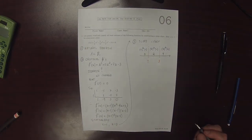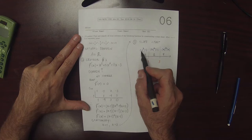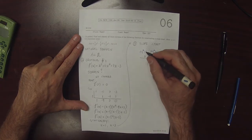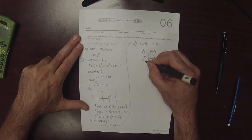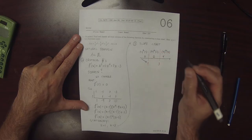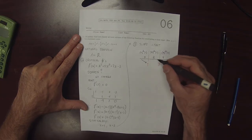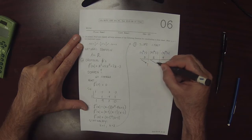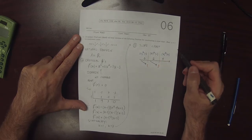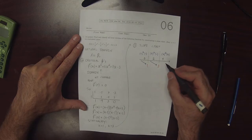And then the overall sign in each region. So negative squared is positive times another negative is negative, so negative slope. Positive squared is positive times negative is negative, so negative slope again. And then positive squared times positive is positive, so positive slope.